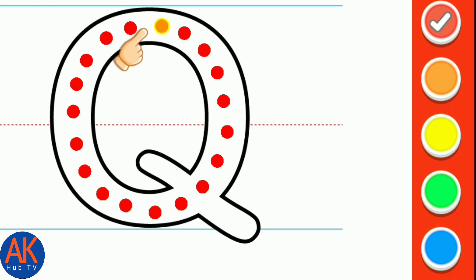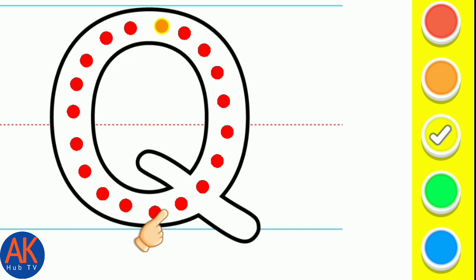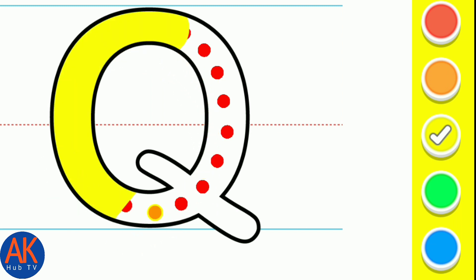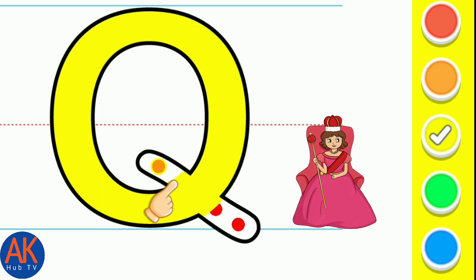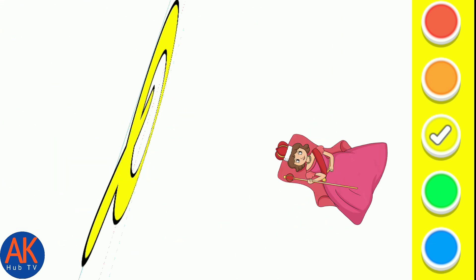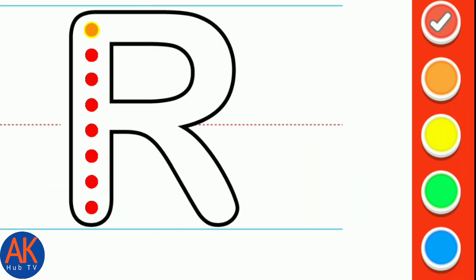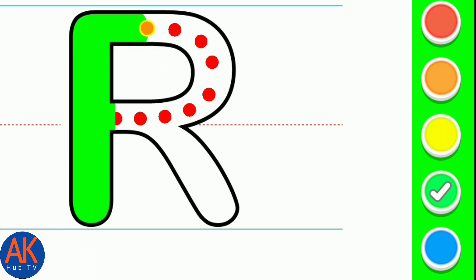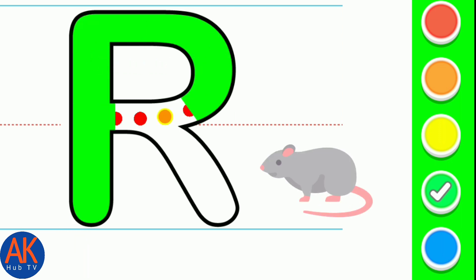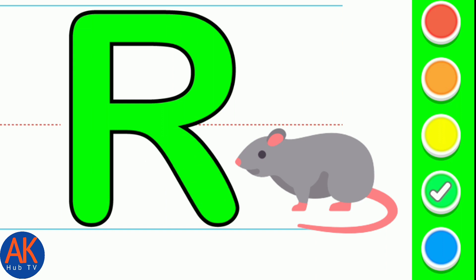Q. Yellow. Q for Queen. Green. R. Green. R for Black.